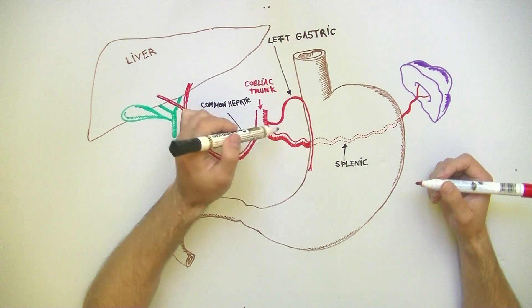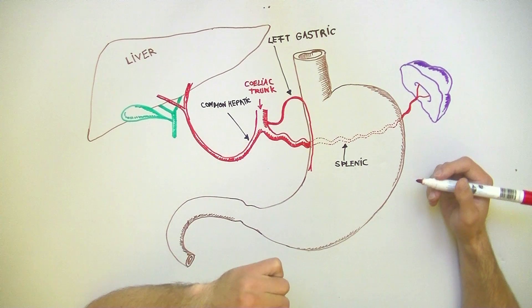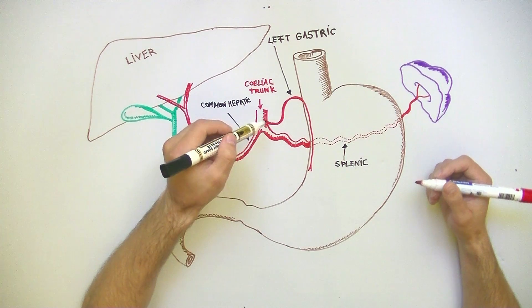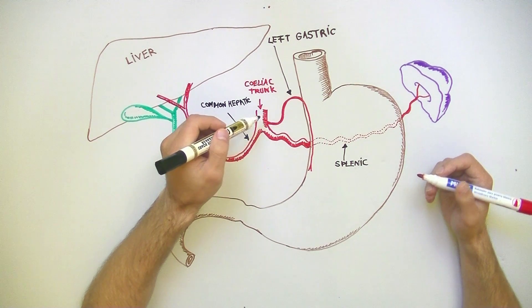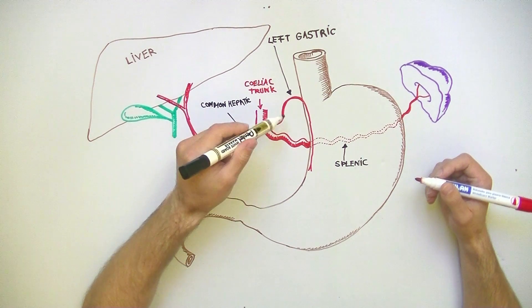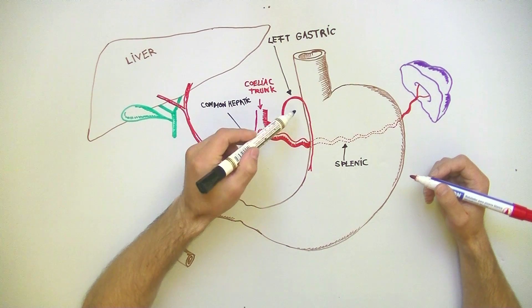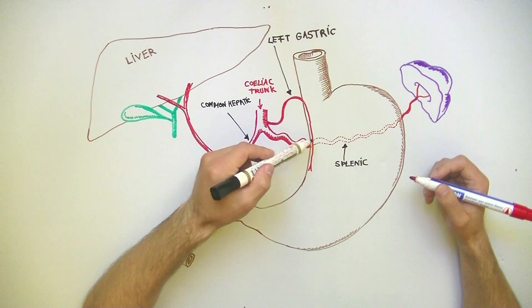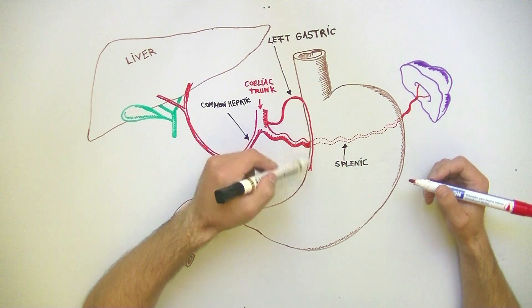First, we'll discuss the left gastric artery. The left gastric artery is the smallest branch of the celiac trunk and it runs down the lesser curvature of the stomach.